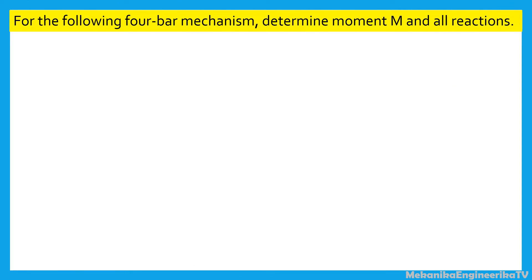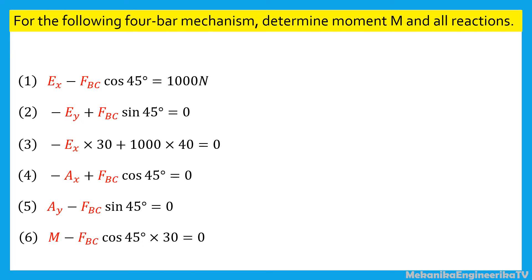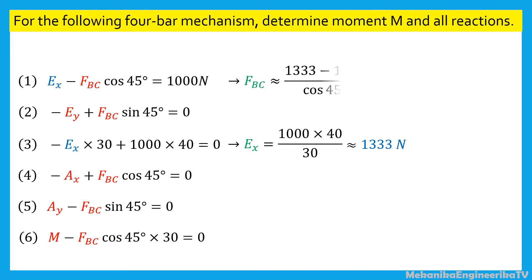Now we have established six equilibrium equations which involve six unknowns: the moment M and five reactions FBC, EX, EY, AX, and AY. It is then possible to solve these equations. Using equation 3, it is possible to find EX: EX is equal to 1000 times 40 divided by 30, or 1333 Newtons. It is then possible to substitute the value of EX in equation 1 and solve for FBC. FBC is equal to 1333 minus 1000 divided by cosine 45 degrees, or 471 Newtons.